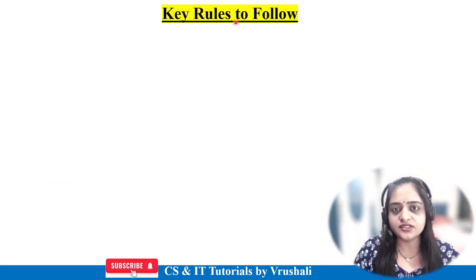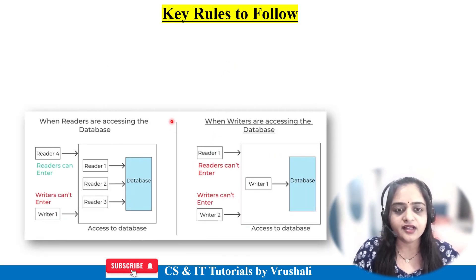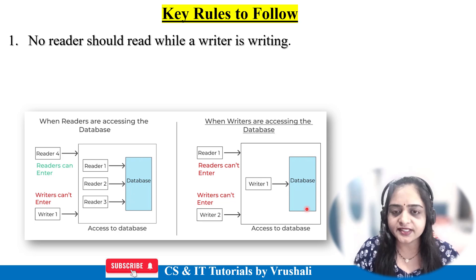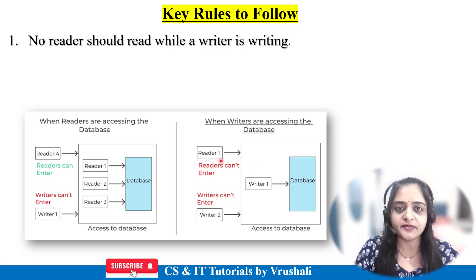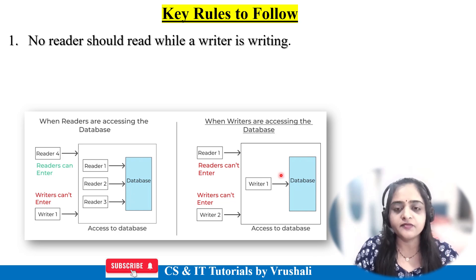There are rules followed by the operating system when multiple processes and threads share the same resources. The first rule is: no reader should read while a writer is writing. In this diagram, a writer is performing a write/update operation on the database, and a reader arrives but is not allowed to enter — it has no permission because the writer is currently updating. So when a writer performs the update operation, readers are not allowed.